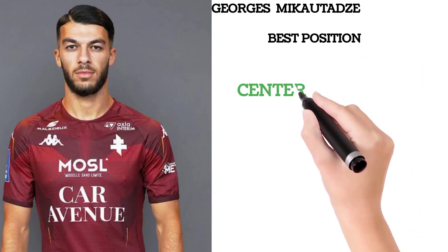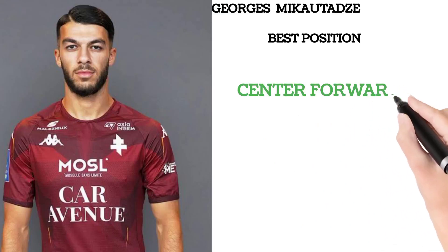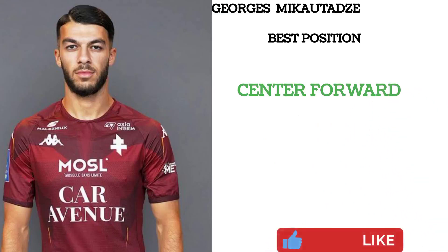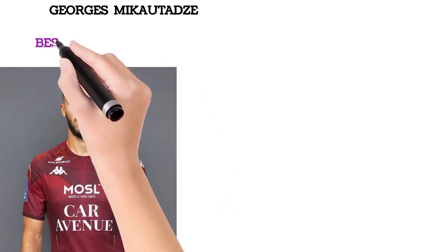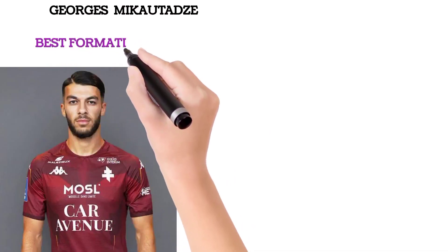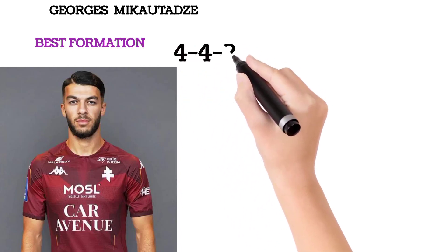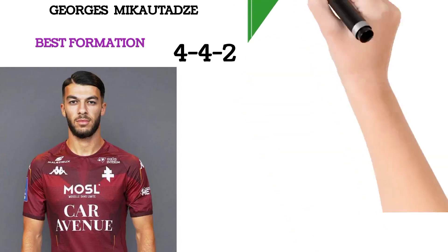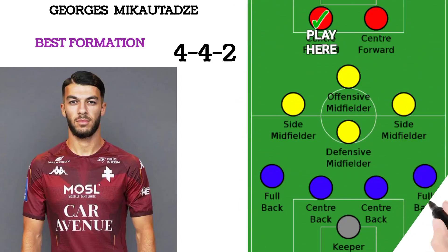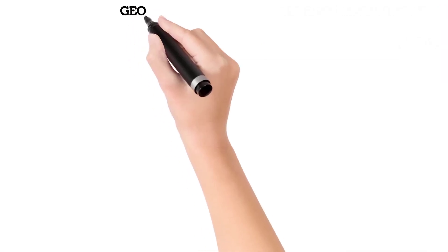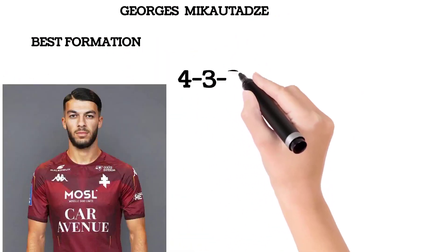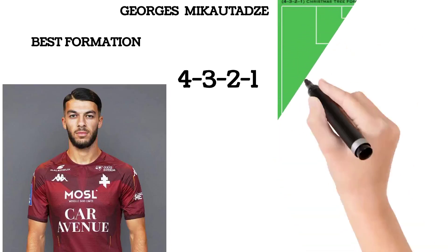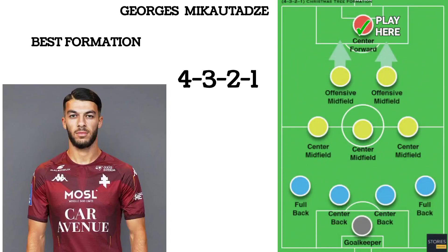He can play as a center forward. Like and subscribe to the channel for more player analysis. The best formation that suits this player's style of playing is a 4-4-2, with two players at the front — one of whom should be Mekatazi. Another formation you can use to bring out the best in this player is the 4-3-2-1, with two attacking midfielders or second strikers playing behind him.